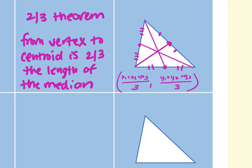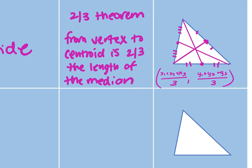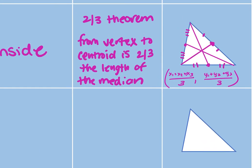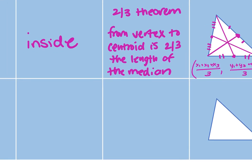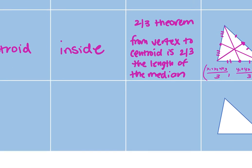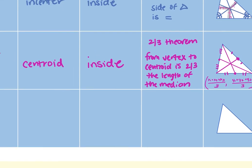On the quiz, they might give you a centroid diagram and ask you to find one of the sides — so you need to know that the median hits at the midpoint. The quiz will test you by saying 'point G is the centroid' — now you know it's the two-thirds theorem. Or 'point X is the circumcenter' — so the distances to the vertices are congruent. Or 'point Y is the incenter' — so the distances to the sides are congruent. There will also be always, sometimes, never questions.